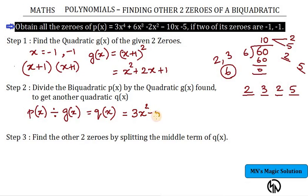3x² minus 5 is our quotient. Next step: in 3x² minus 5, I have to try doing splitting the middle term in order to find out the two solutions.